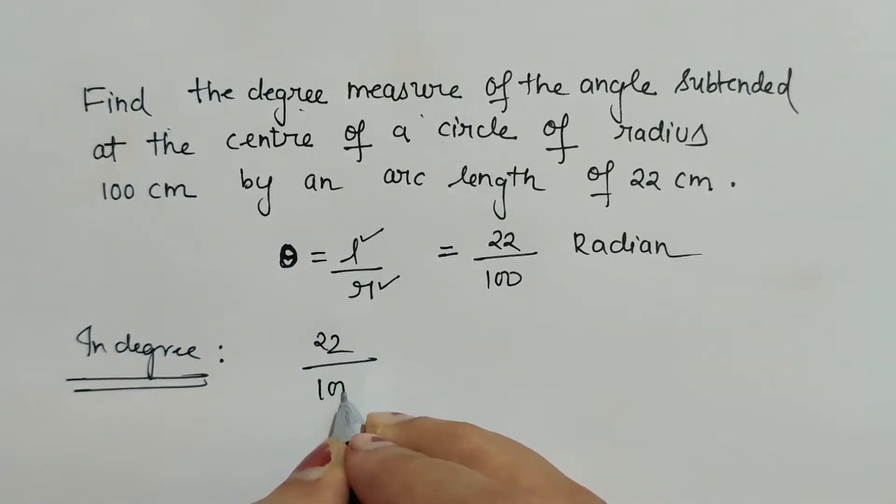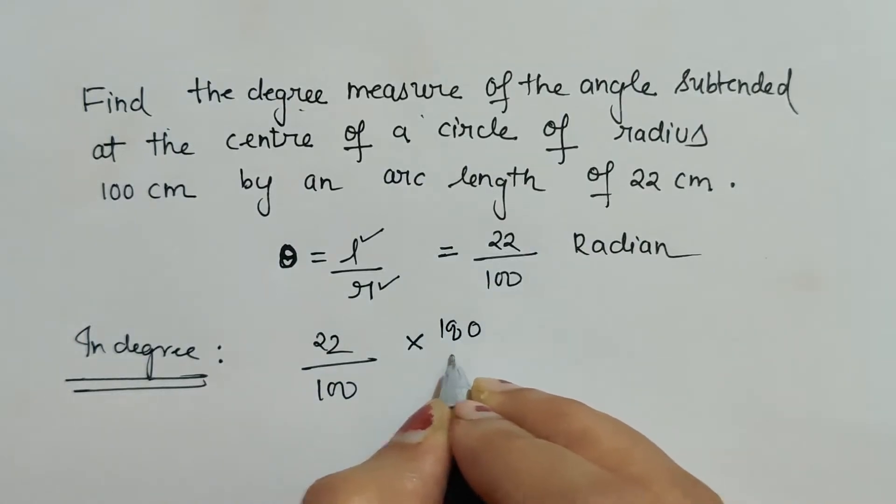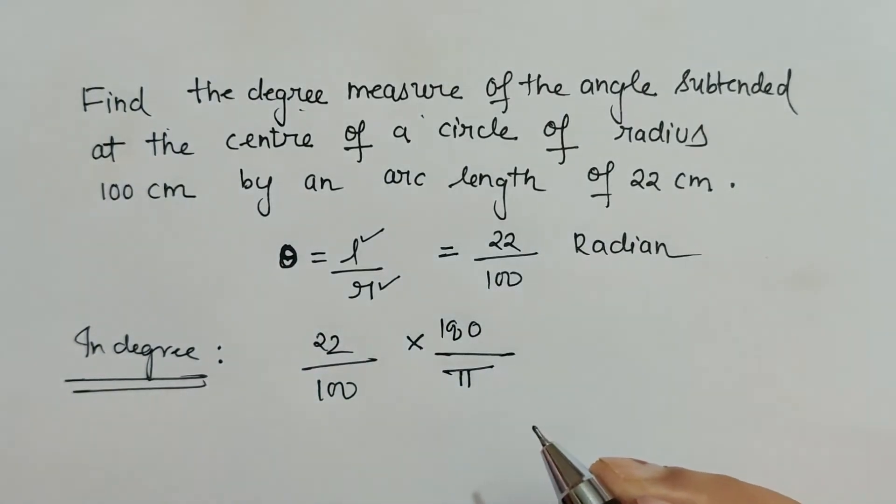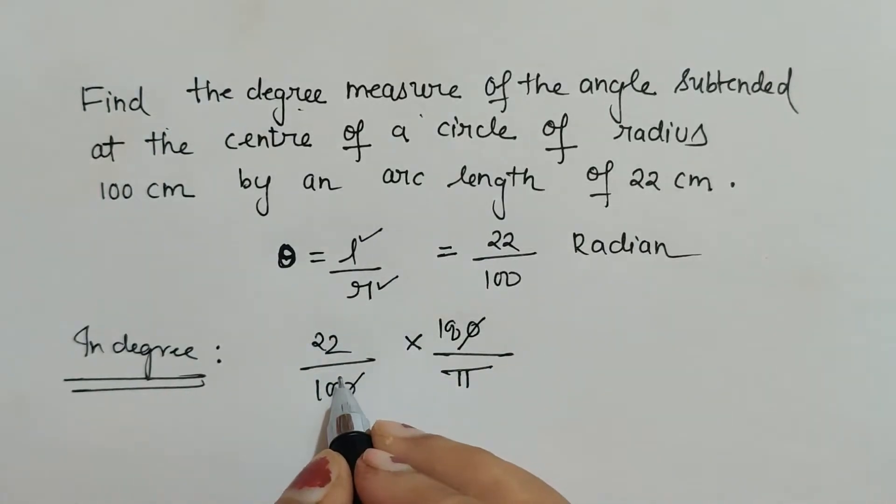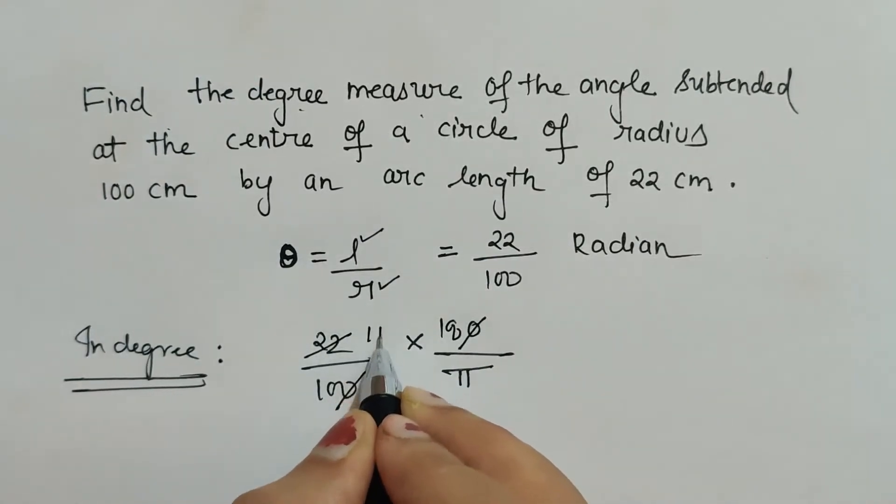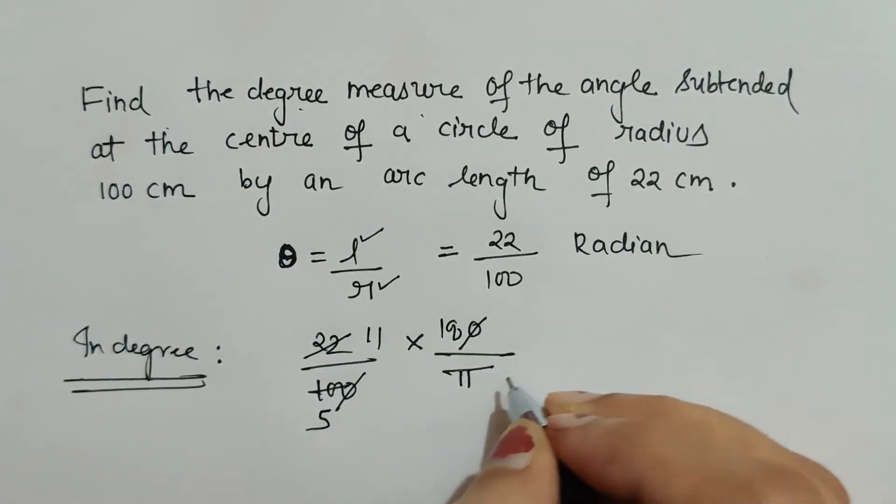Now let's cancel zeros. Here again we can cancel it by 2: 11, 22 by 2, 5, 10. Then let's put pi as 22 by 7.